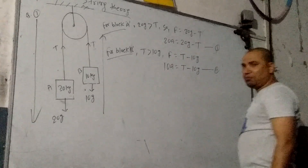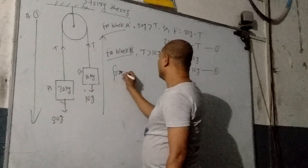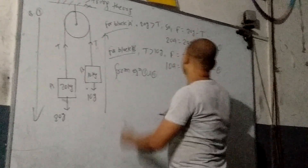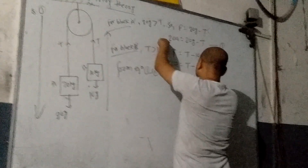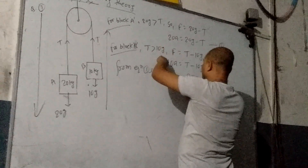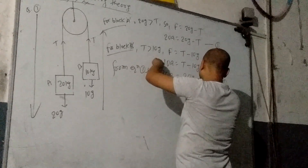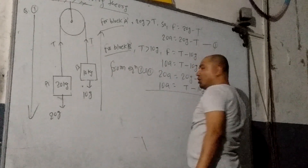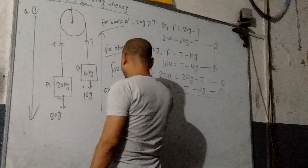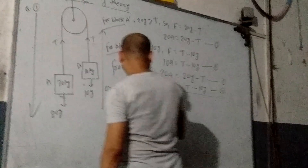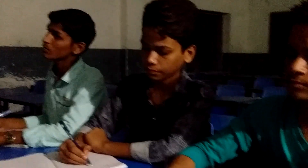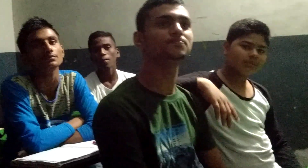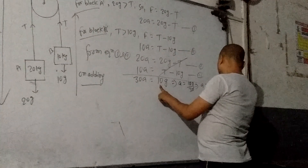Now from equation 1 and equation 2: equation 1 gives 20A = 20g − T, and equation 2 gives 10A = T − 10g. Adding both equations, T and −T cancel out. We get 30A = 20g − 10g = 10g. So 30A = 10g, which gives A = g/3.